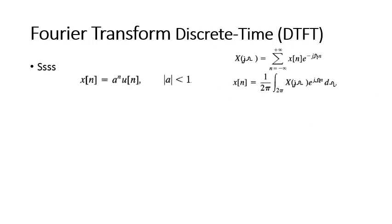Let's look at our first example: an exponentially growing or decaying signal — x[n] = a^n * u[n]. Here u[n] is the unit step signal, which means the signal will be zero when n is negative. Since we are multiplying both signals, the product will be non-zero only when both are non-zero — i.e., for n greater than or equal to zero, up to positive infinity. These are the equations for the Discrete Time Fourier Transform.